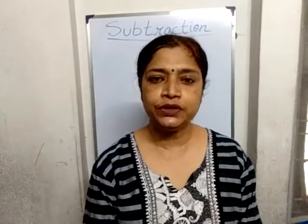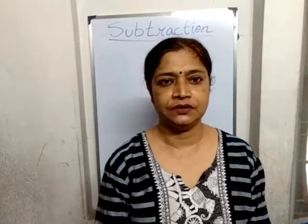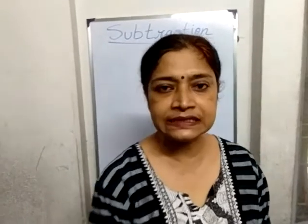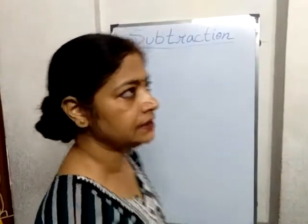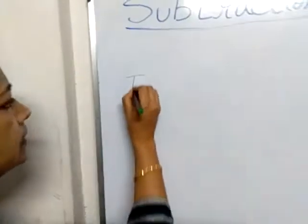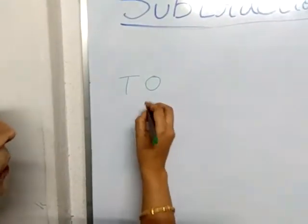Hello students. Today we will learn subtraction. There are two types: horizontal and vertical. P for tens, O for ones.